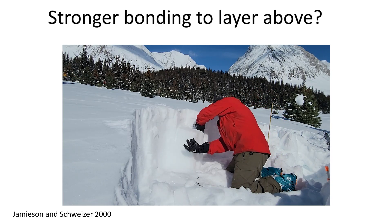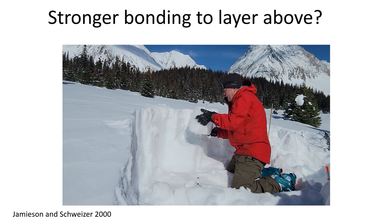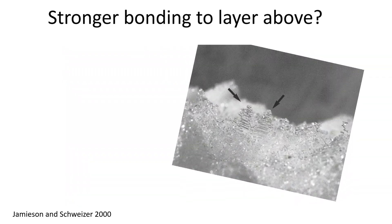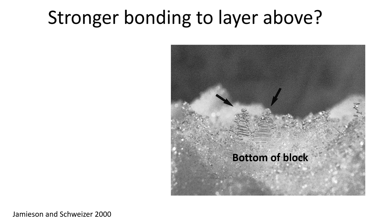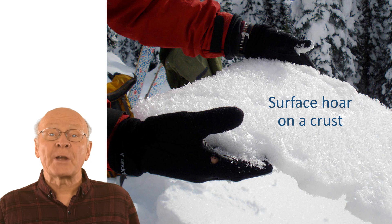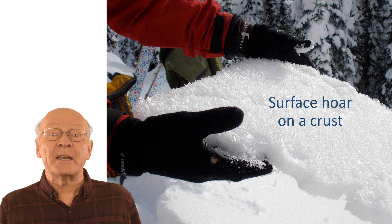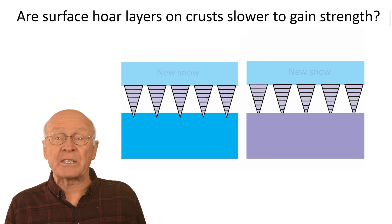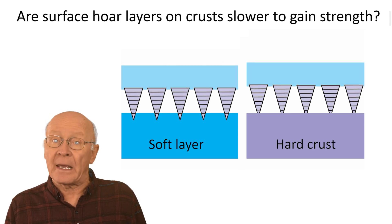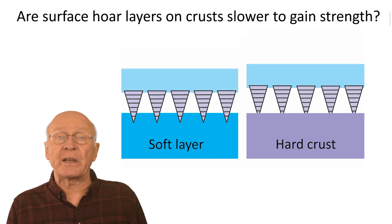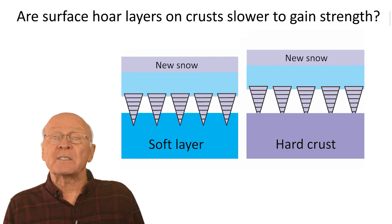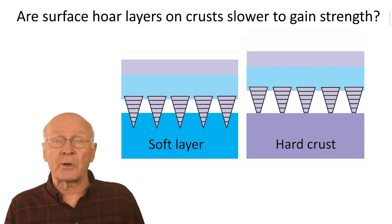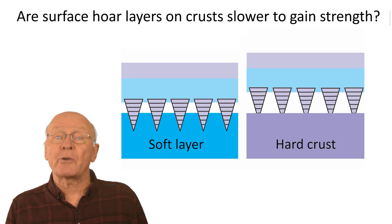After a surface oar layer fractures in a snowpack test, the crystals are usually attached to the bottom of the block. This implies the bonding at the narrow base of the surface oar crystals is often weaker than the bonding to the layer above. When a surface oar layer forms on a hard layer like a melt-freeze crust, the penetration into the lower layer and associated strength gain can be much slower. The left animation shows faster penetration into a soft underlying layer and the right animation shows slower penetration into an underlying crust. Slower penetration into the crust means the surface oar layer is slower to gain strength and prone to crack propagation for longer.